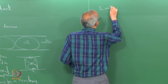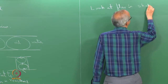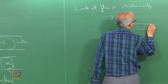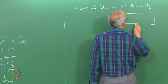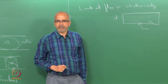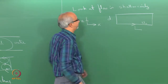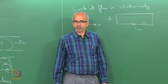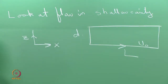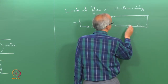We will look at the flow in the shallow cavity problem. In this problem, the x direction is horizontal and the z direction is vertical. The lower plate is the one which is moving with velocity U0 in the positive x direction. Clearly, the liquid is going to get dragged and form some kind of vortex.